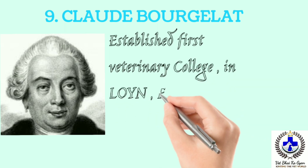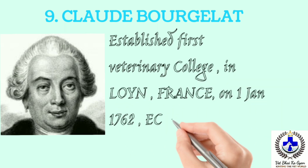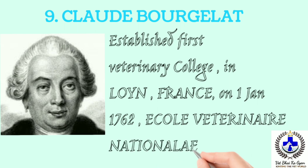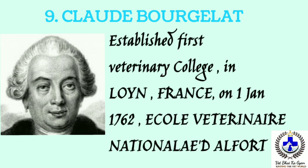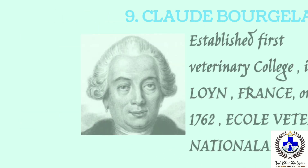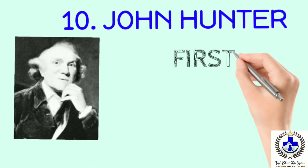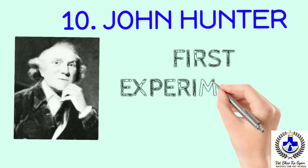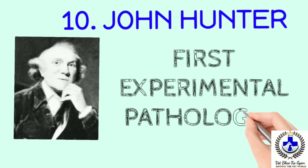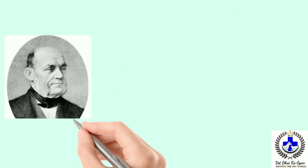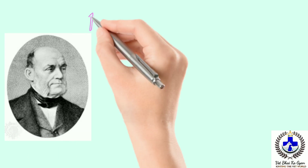Next scientist is Claude Bourgelat — he established the first veterinary college in Lyon, France, on 1st January 1762, called École Nationale Vétérinaire d'Alfort. Next we talk about John Hunter — he is the first experimental pathologist.